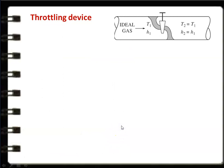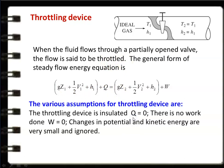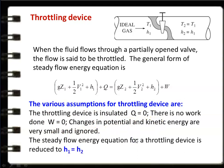The throttling device is simply the valve available in the pipeline. When fluid flows through a partially opened valve, the flow is said to be throttled. In the steady flow energy equation, the assumptions are Q = 0, W = 0, and there is no change in kinetic energy. For a throttling device, H1 = H2 — enthalpy before throttling equals enthalpy after throttling. For an ideal gas, T2 = T1 as well.